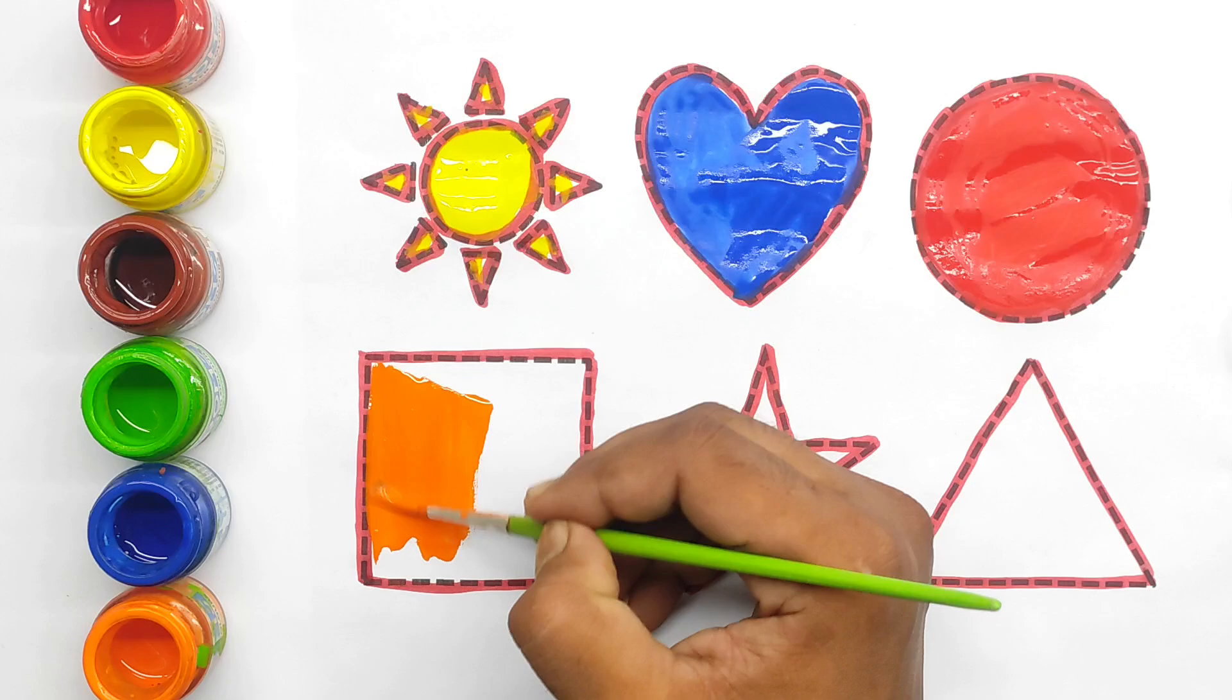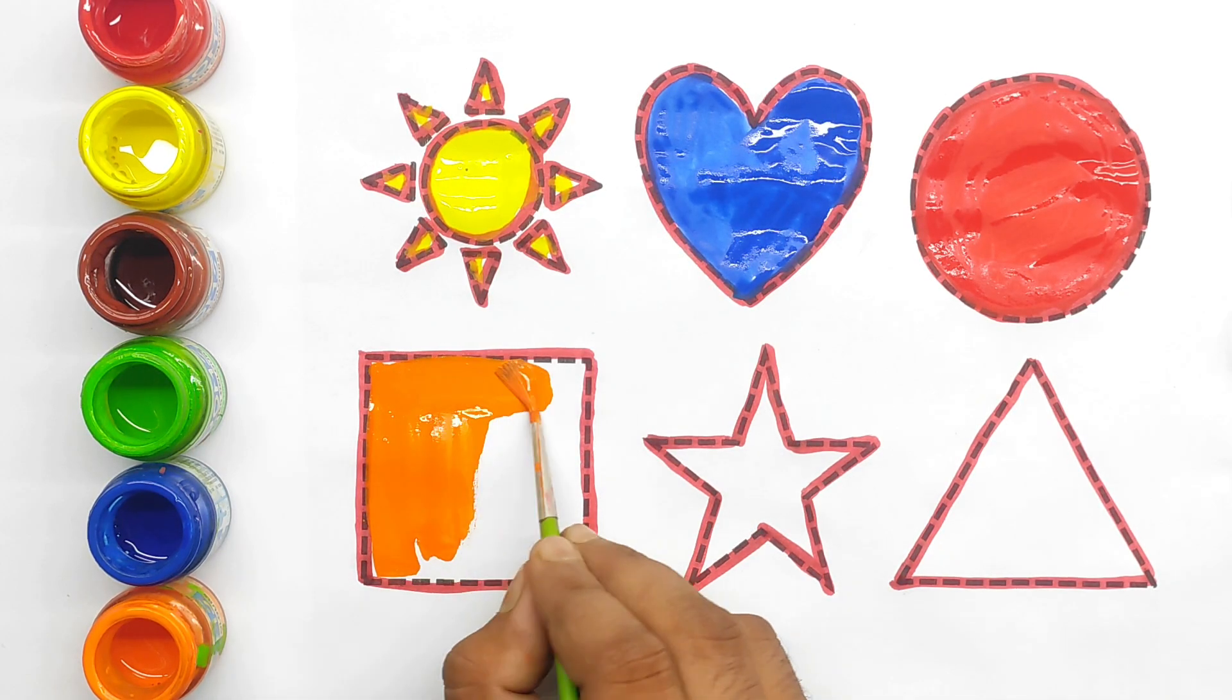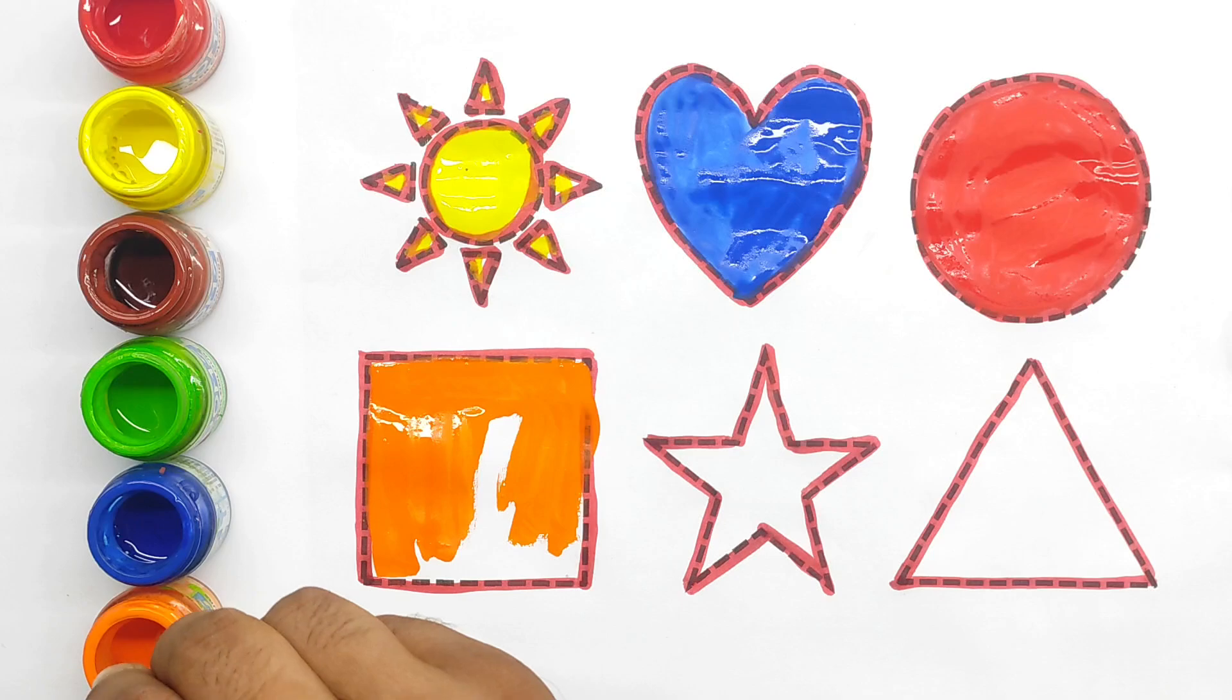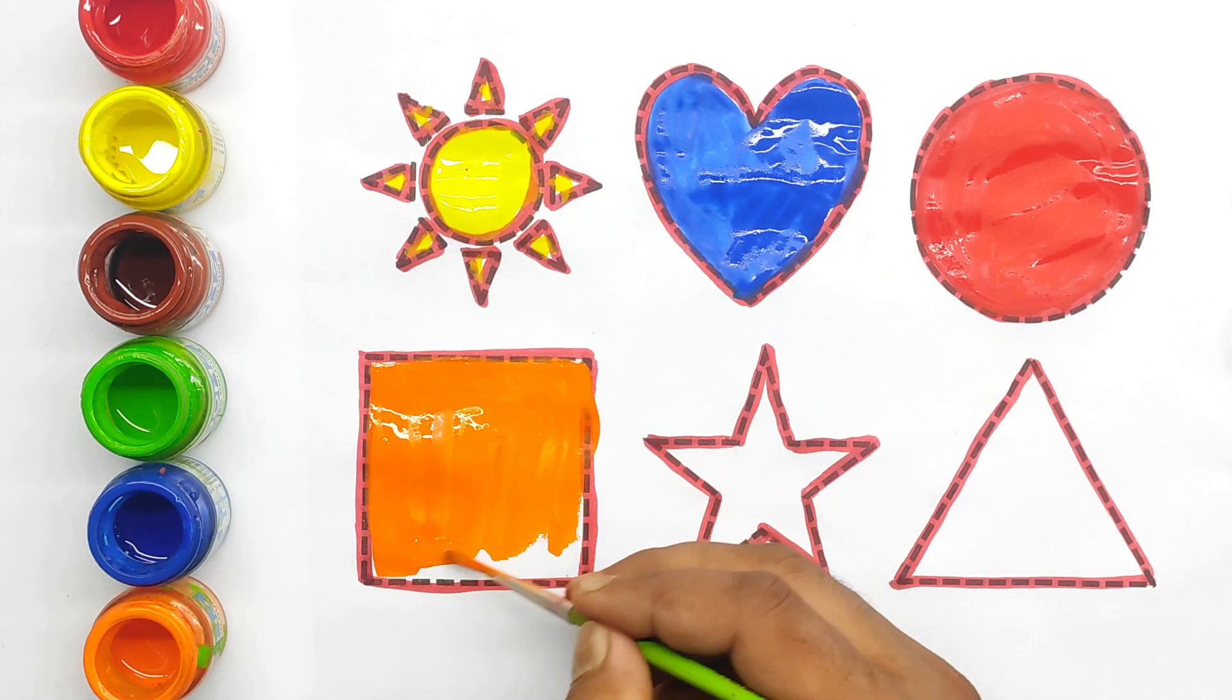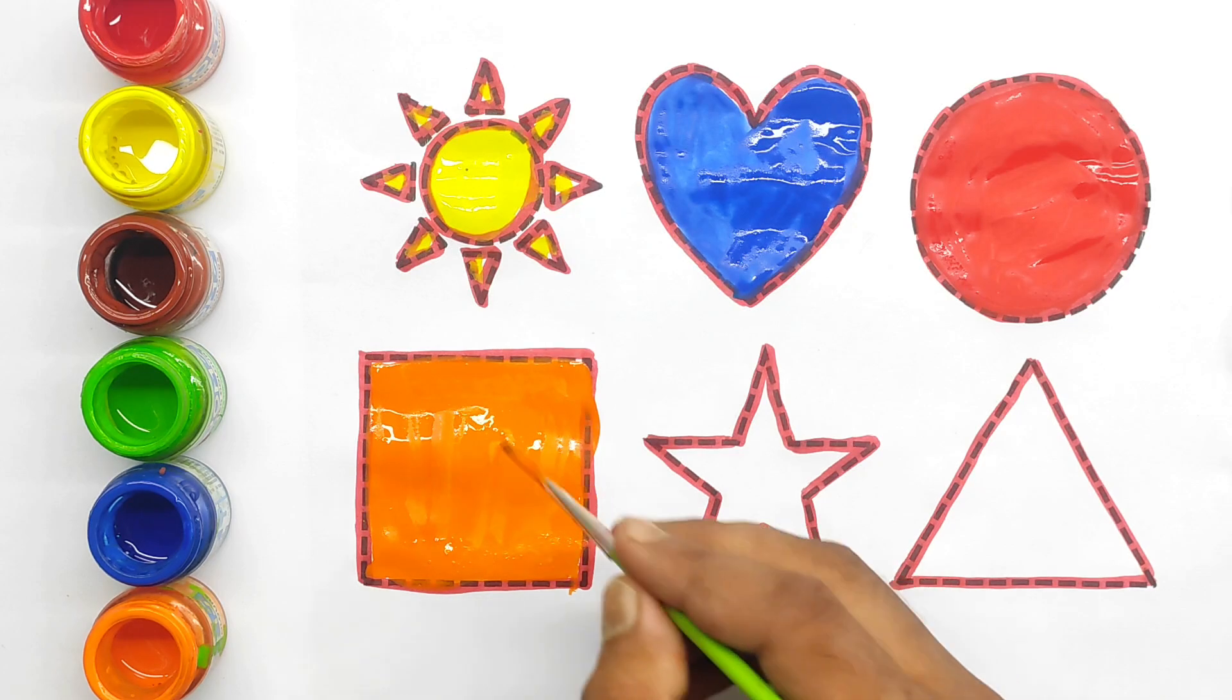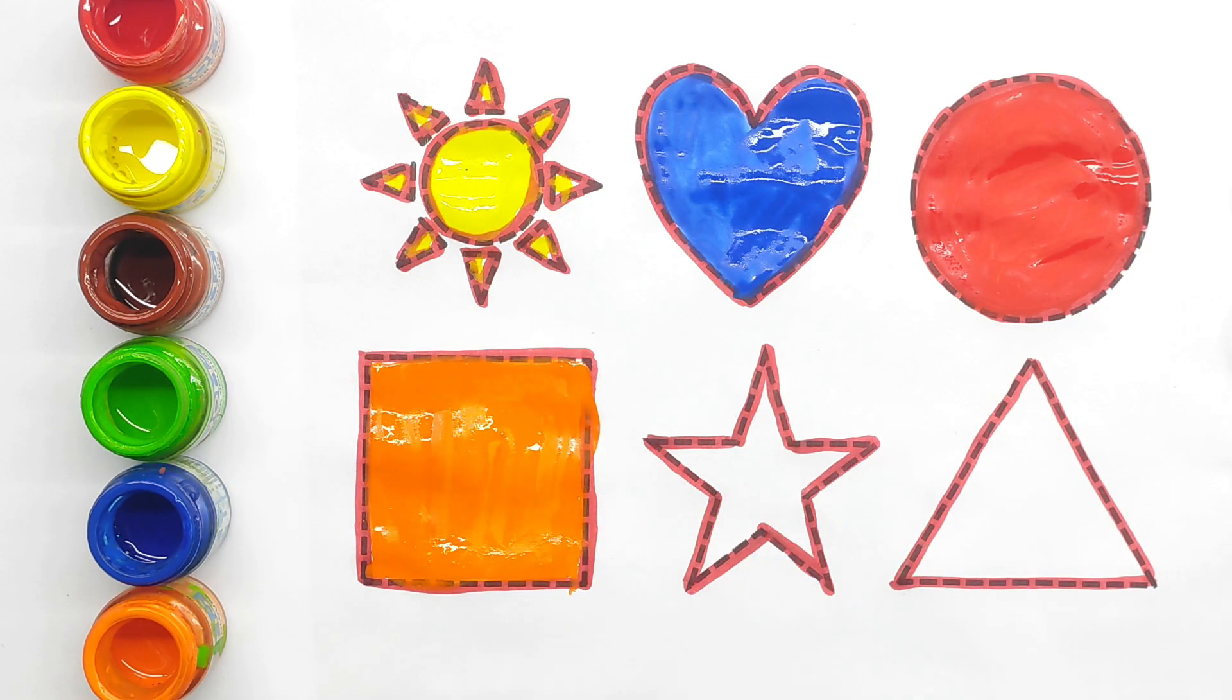Orange color. Square. This is square shape. Color fill. Orange color. Green color. Fun kids. Square shape.